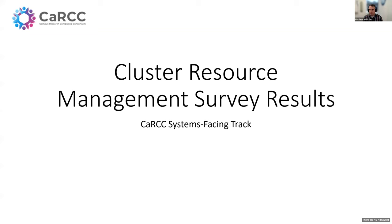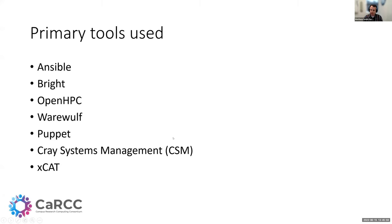The survey results preview is described as a light teaser to encourage more people to fill it out. There's quite a range of primary tools being used by respondents — including XCAT, Puppet, OpenHPC, Ansible, Bright, and Cray — matching what was discussed in today's talks.